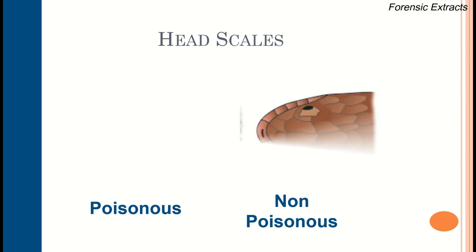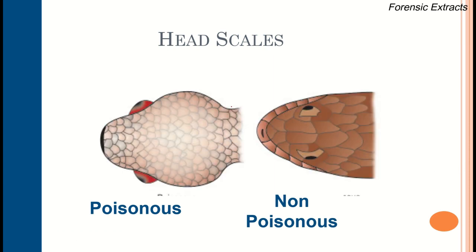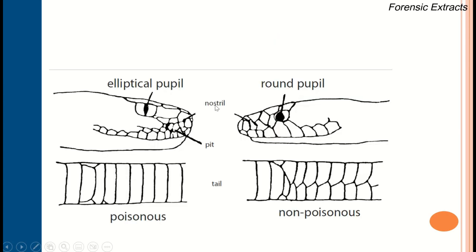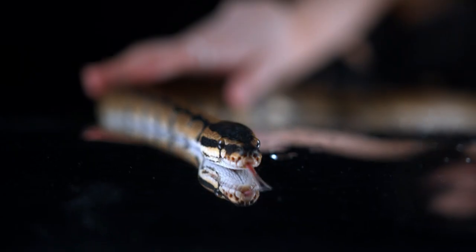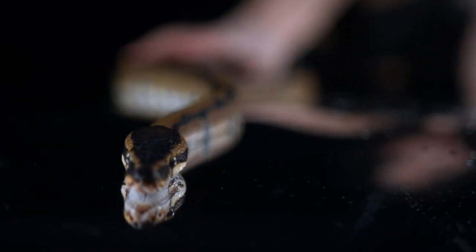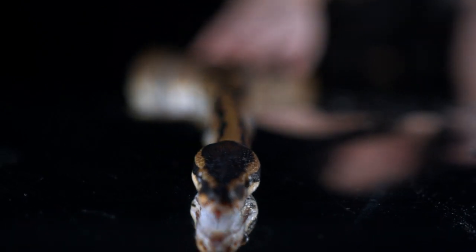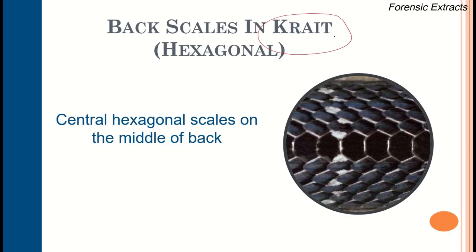As visible in the photographs, the head is round in non-venomous snakes and triangular in venomous ones. The pupil is vertical or elliptical in venomous snakes and round in non-venomous snakes. Tail scales are in a single row in venomous and double rows in non-venomous snakes. One characteristic feature of the krait is its hexagonal scales on the middle of the back.